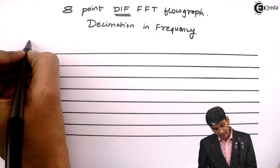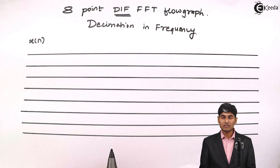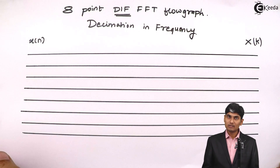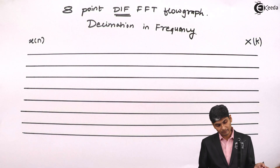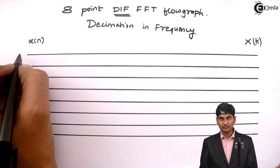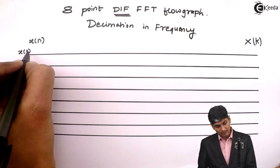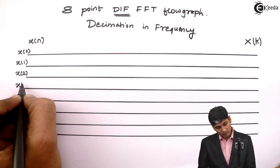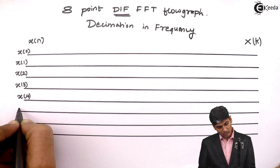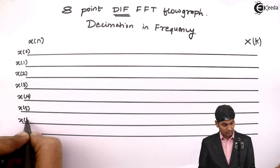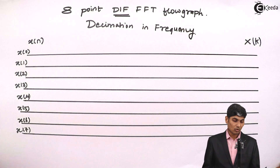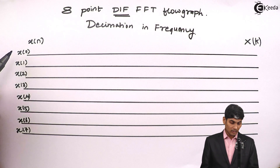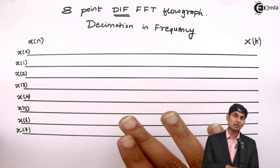On this side I am going to write X of n, that is a time sequence. And on this side, I am going to write X of k, which is a frequency domain or Fourier domain sequence. In the DIF-FFT flow graph, we write X of 0, X of 1, X of 2, X of 3, X of 4, X of 5, X of 6, and X of 7. All the input or time domain sequences are provided in order.